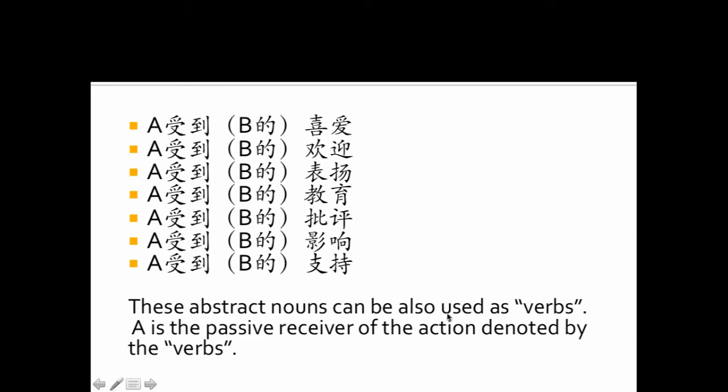What's more, these abstract nouns can be also used as verbs. Like, 她受到妈妈的表扬, we can also say 妈妈表扬她。她受到妈妈的批评,我们也可以说妈妈批评她。她们受到大家的支持,我们也可以说大家支持她们。So A, the subject, is the passive receiver of the action denoted by these verbs, these nouns.